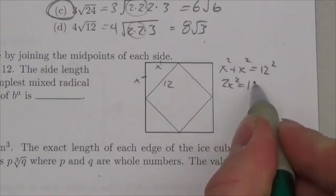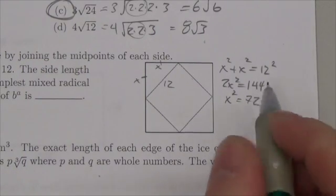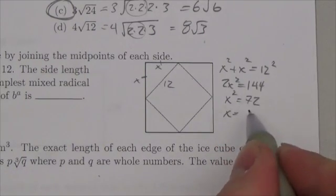So 2x squared has to equal 144. Divide by 2, x squared has got to equal 72. And if you take the square root,